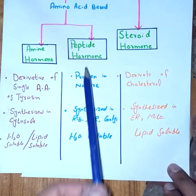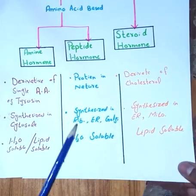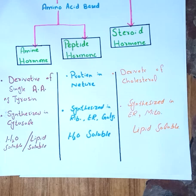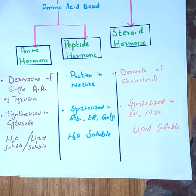Peptide hormones are synthesized not only in the ribosome but also in the endoplasmic reticulum and Golgi apparatus, as they all play very important roles in hormone synthesis. Steroid hormones are also synthesized in the endoplasmic reticulum. Endoplasmic reticulum is of two types: smooth and rough. On rough ER, ribosomes are present and play a role in protein synthesis and post-translational modification. Smooth ER is a reservoir of calcium and helps in steroid hormone synthesis. Mitochondria also play a very important role in steroid hormone synthesis.